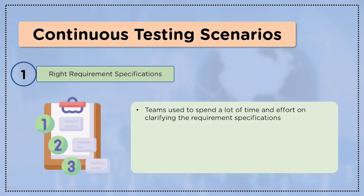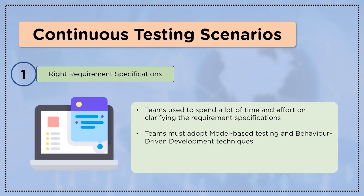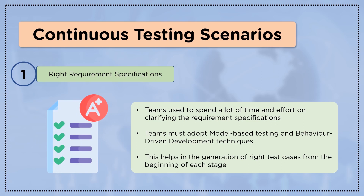In the continuous testing section, the first real-time scenario is writing requirement specifications. Teams spend a lot of time and effort clarifying requirement specifications. If a team is able to set the right requirements, almost half of the project is already successful. It is very important to have a specific and accurate understanding of requirements, which helps in designing better test plans. Teams must adopt model-based testing and behavior-driven development techniques to generate the right test cases from the initial steps.